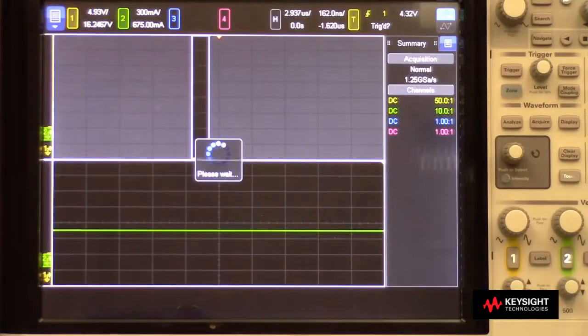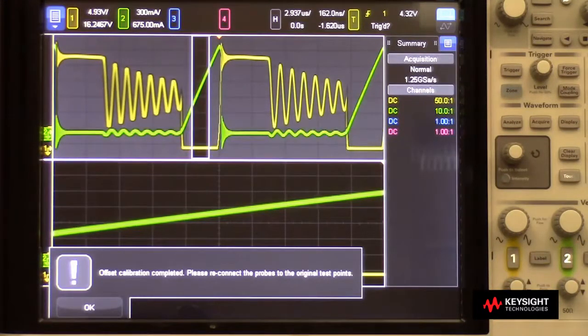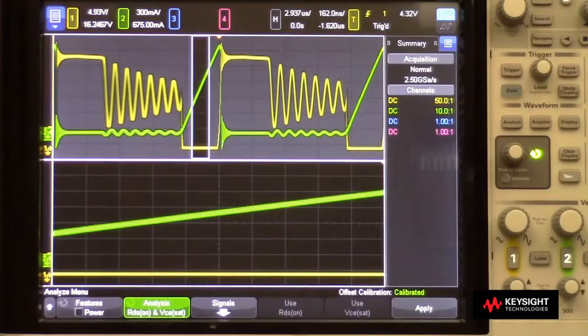It turns on averaging and measures what's actually there when there is nothing there, or measures what the scope thinks is there. So I connect everything back up and press OK.